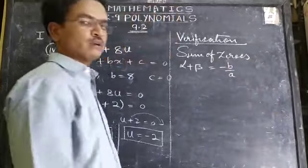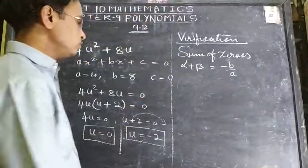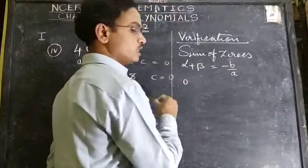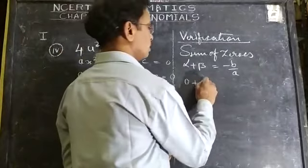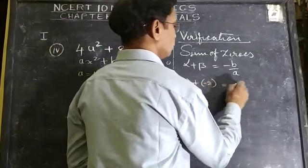Alpha value, what we got is 0. Substitute that 0 here, plus beta value -2. So 0 + (-2) equals minus - what is the b value?